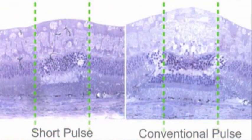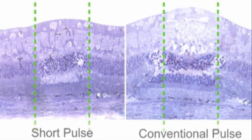As seen in histology, PASCAL's short pulse durations reduce heat diffusion into the retina and choroid.